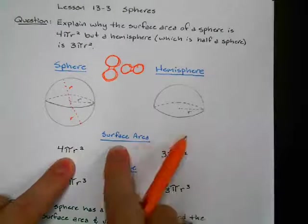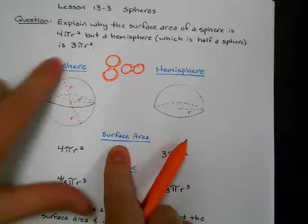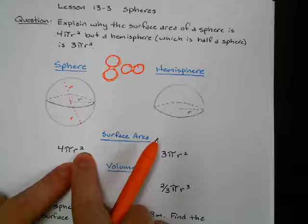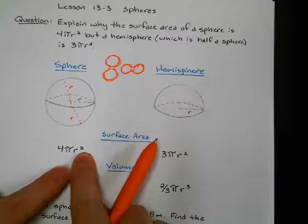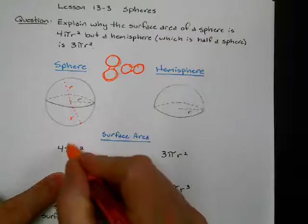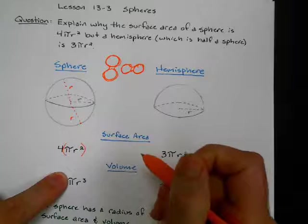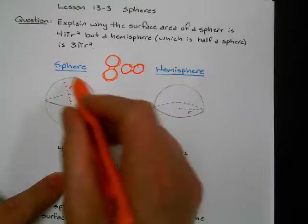So the surface area of this, so the outside of the shape, notice we're talking about area, so it's flat, two dimensions. We get four, and then this part is the area of a circle. So there's four areas of a circle on the outside of the sphere.